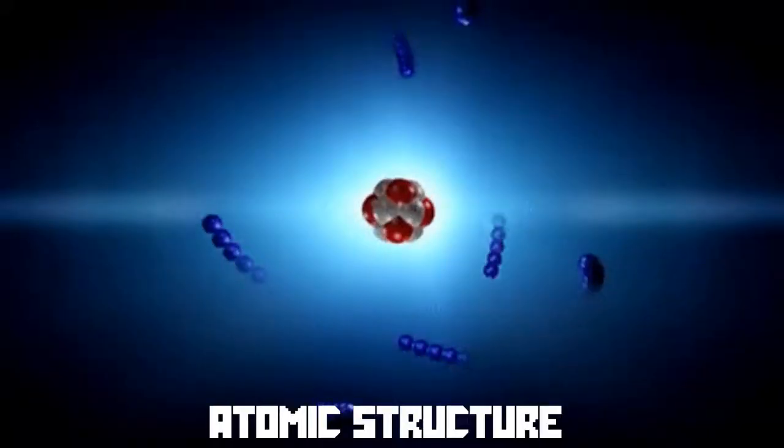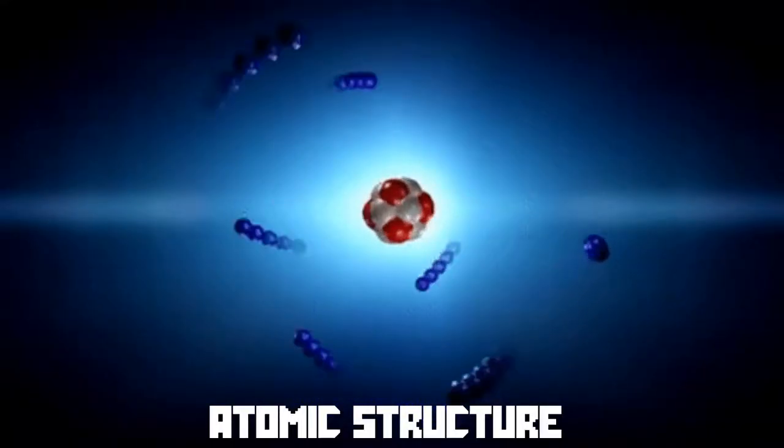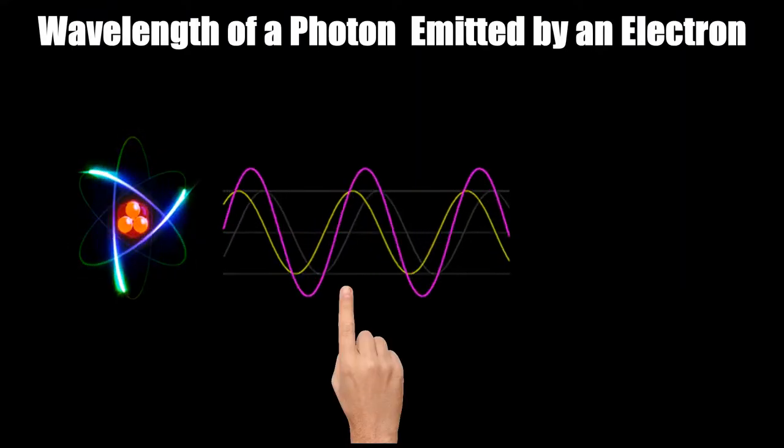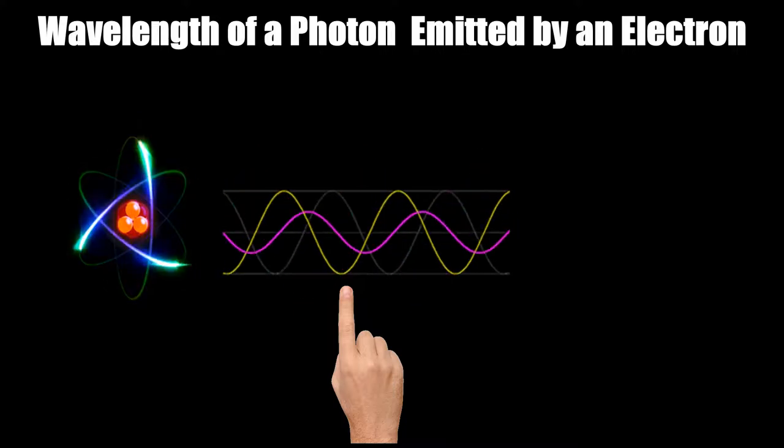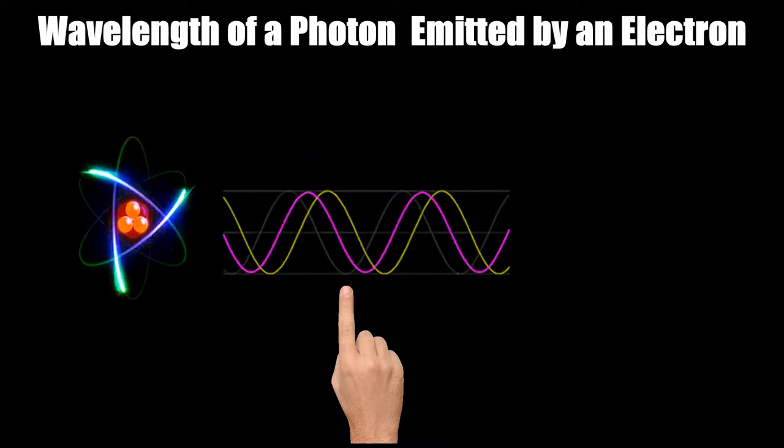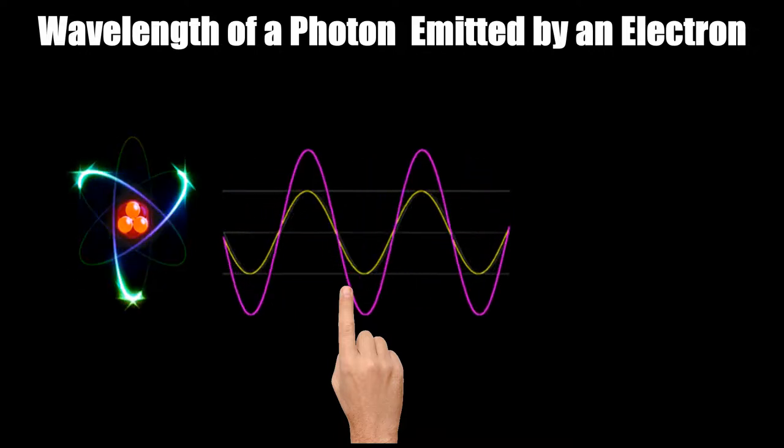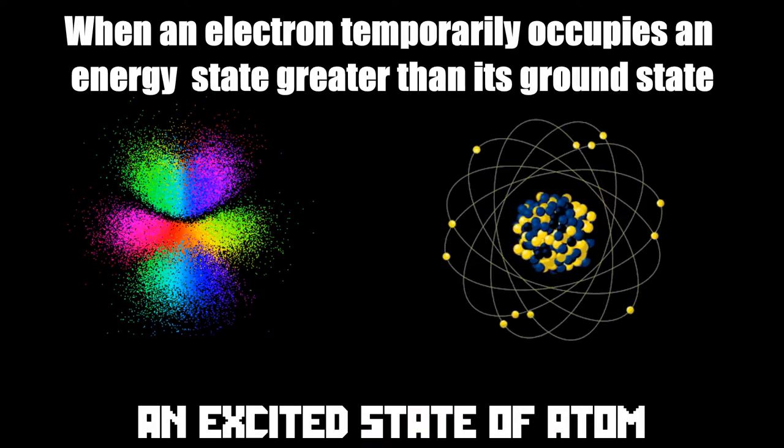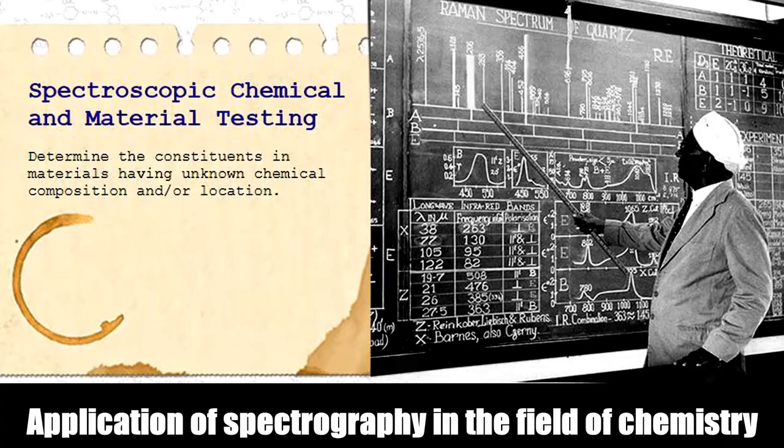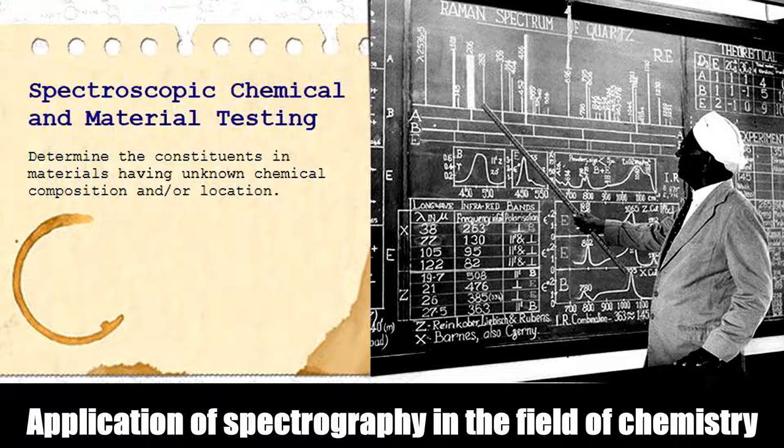The large number of wavelengths emitted by these systems make it possible to investigate their structures in detail, including the electronic configuration of ground and various excited states. Spectroscopy also provides a precise analytical method for finding the constituents in material having unknown chemical composition.